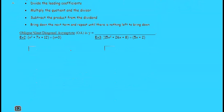So let's do two examples here. And again, an oblique asymptote is y equals the quotient when there is a remainder.